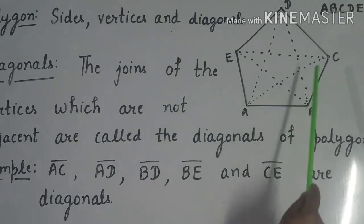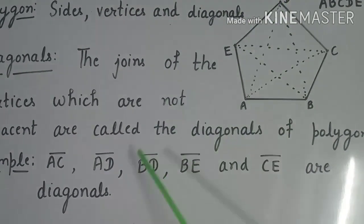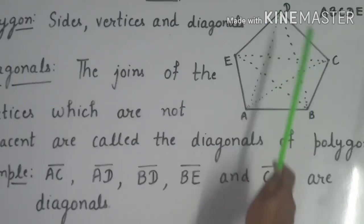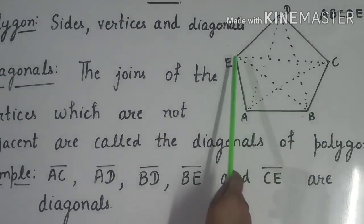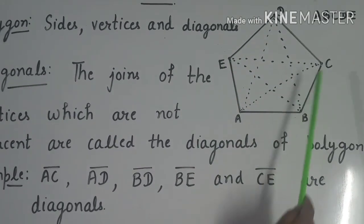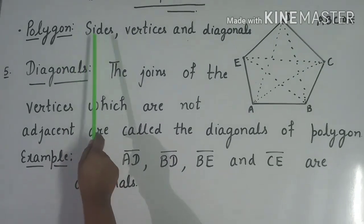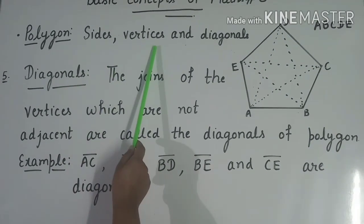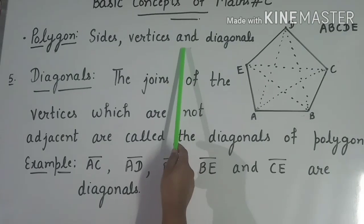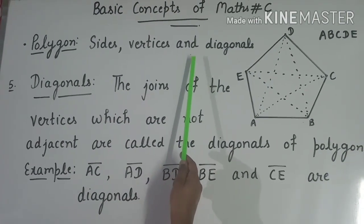So the diagonals of this figure are: AC, AD, BD, BE, and CE. We have discussed polygon, sides of polygon, vertices of polygon, and diagonals of polygon. I hope today's topic is clearly understood. Thank you.